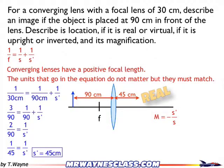Magnification is negative image distance divided by object distance. So magnification is negative 45 over 90, which equals negative one half. This tells me two things: number one, my new image is going to be half the height of my original object. Also, because it's negative, it's going to tell me that it's upside down, or inverted, from the original image.